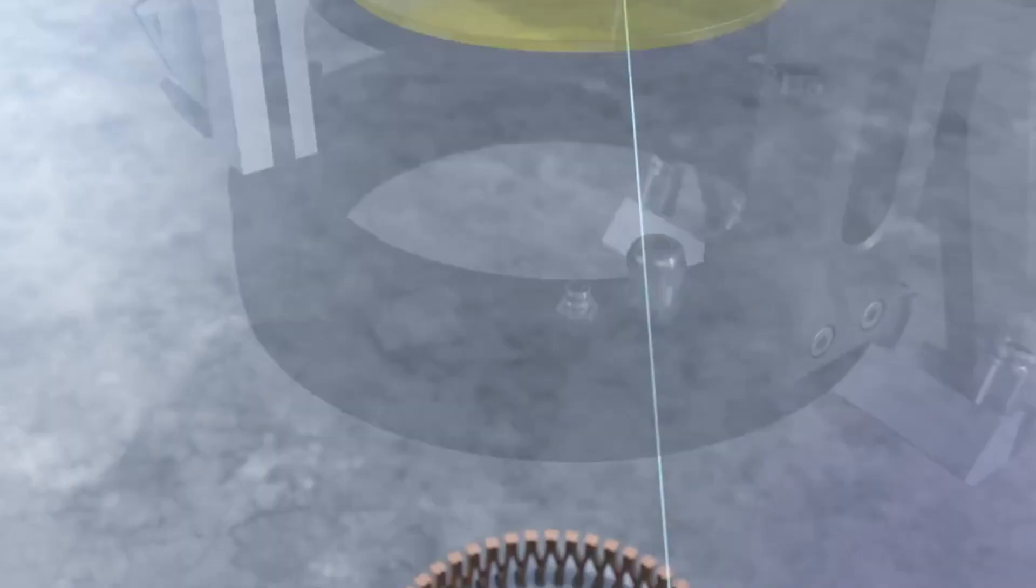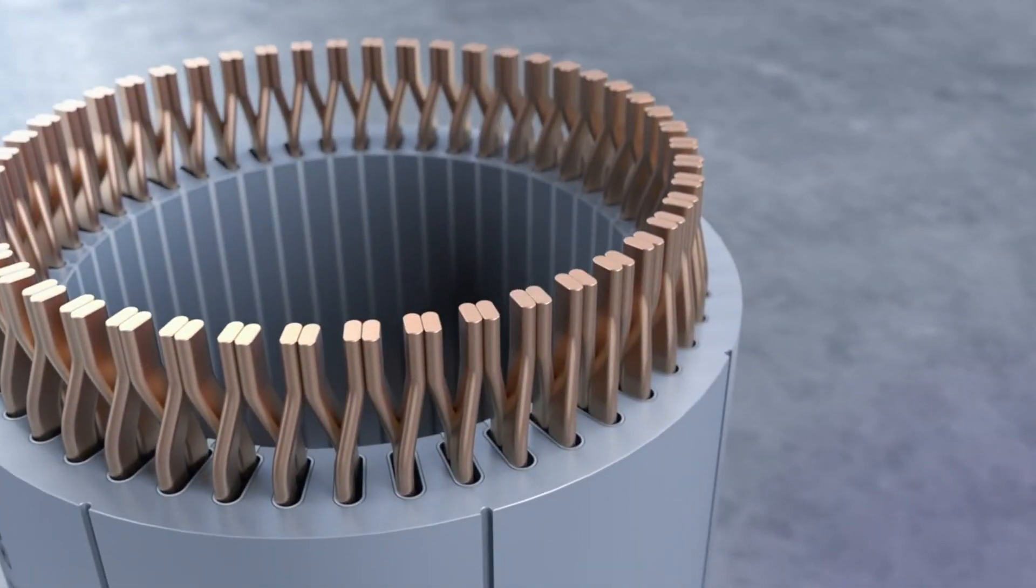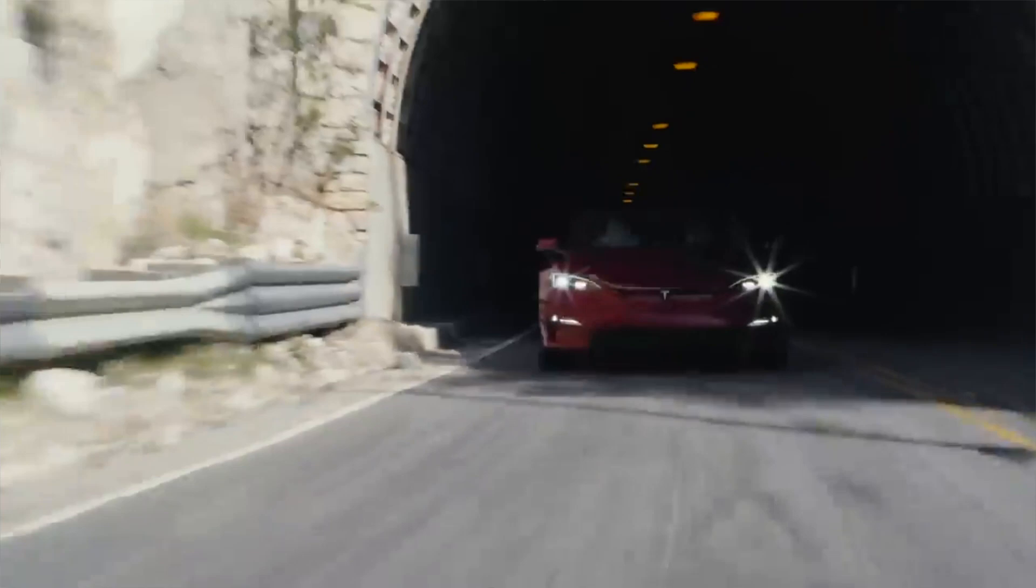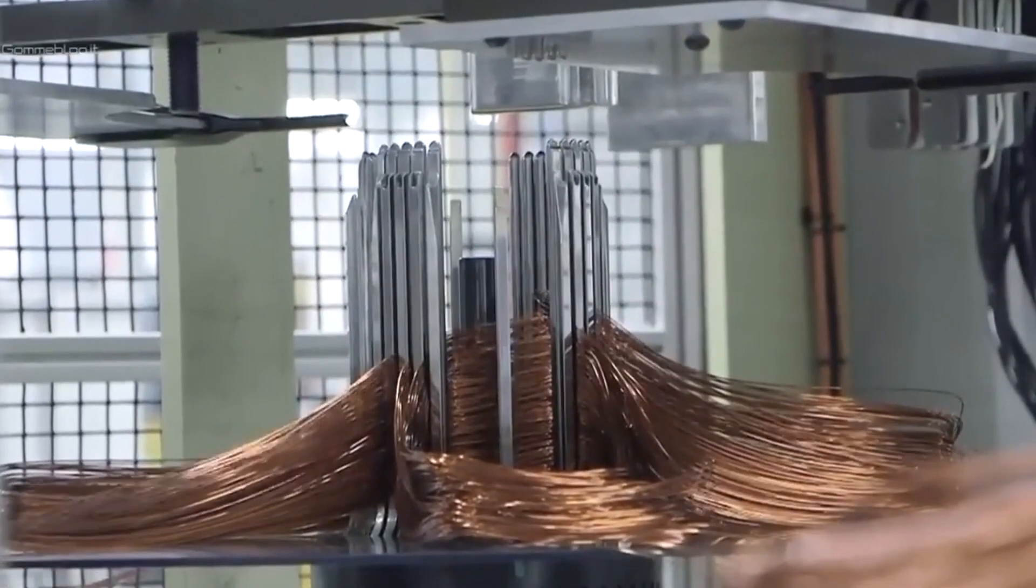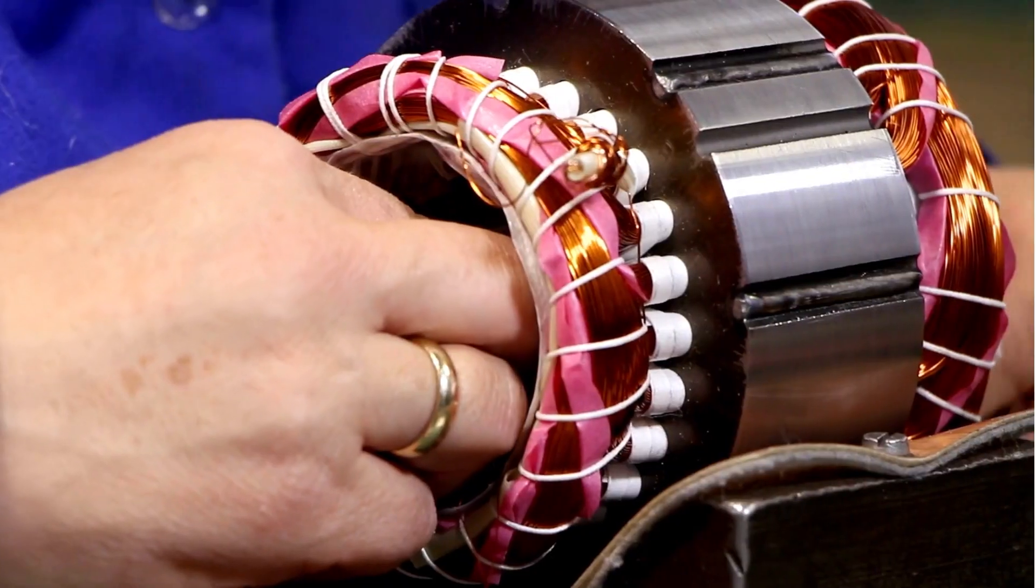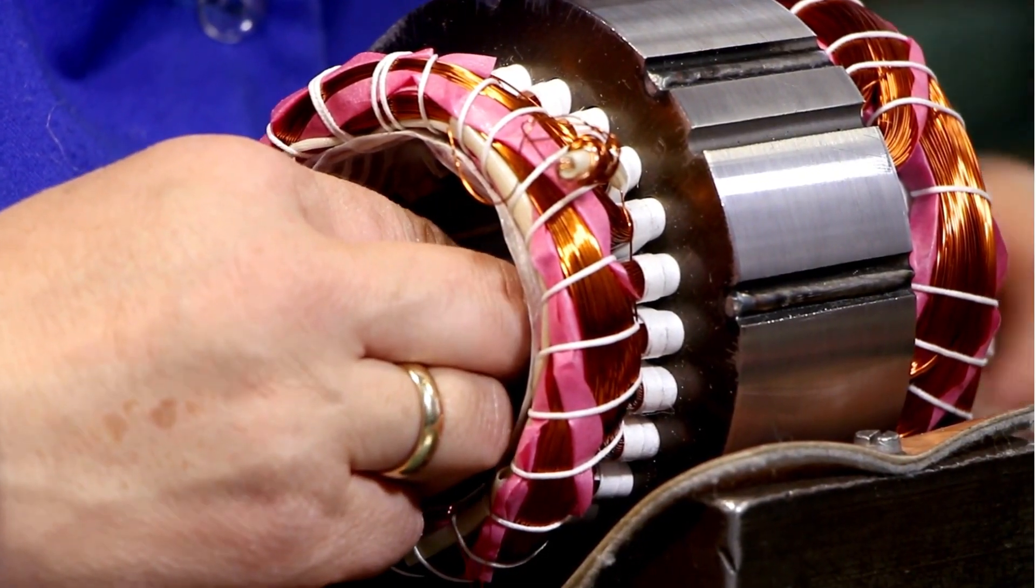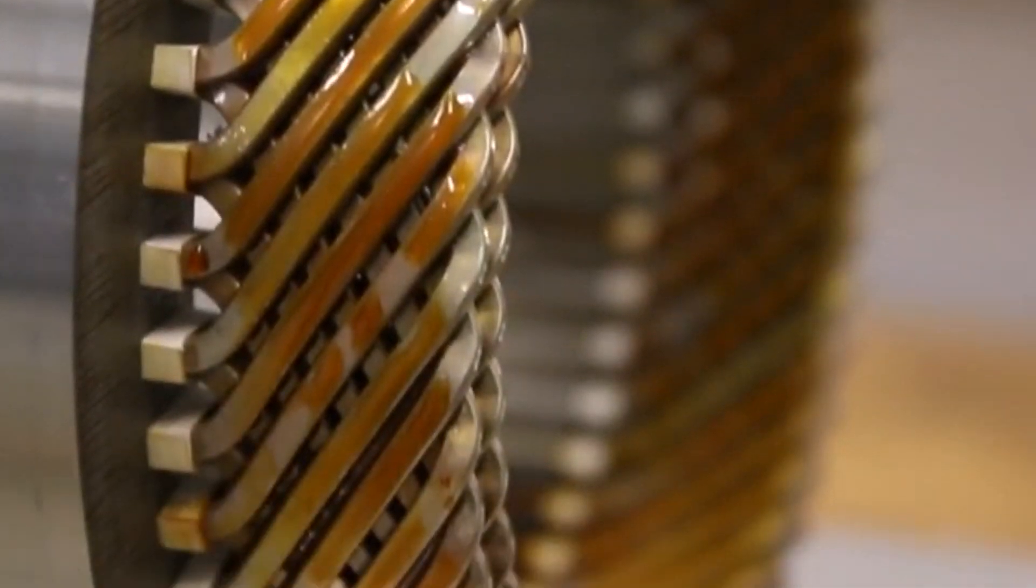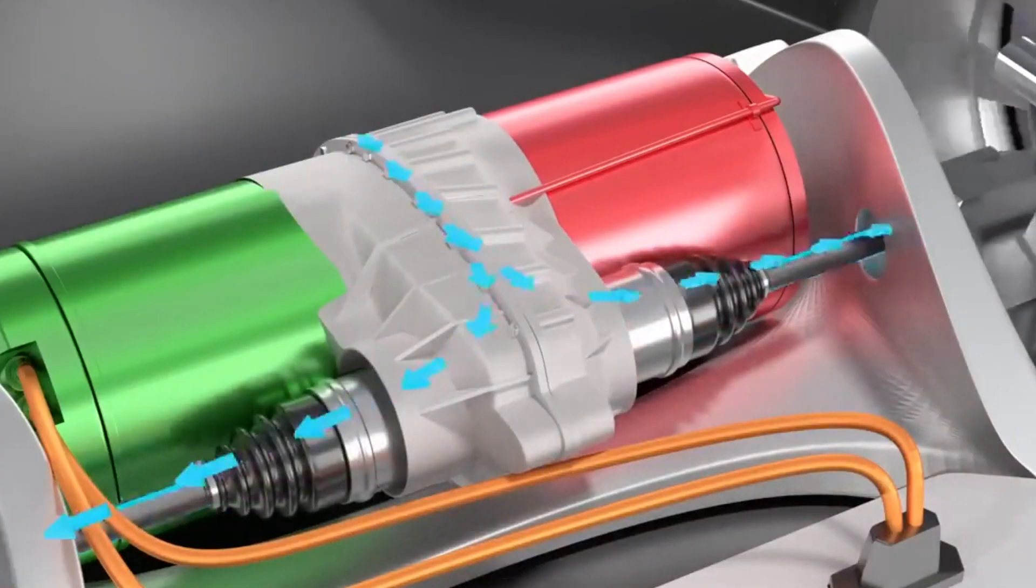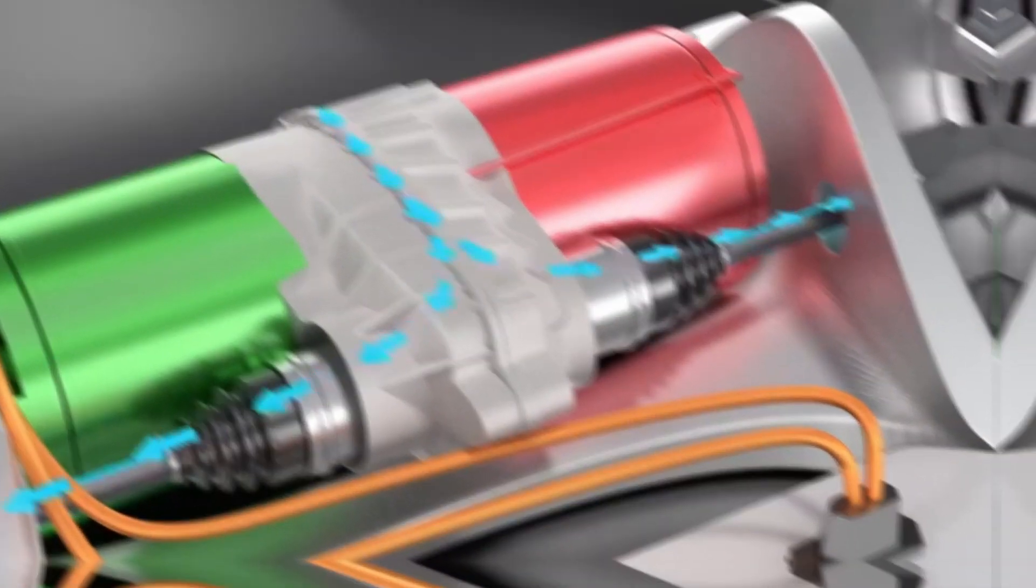Hairpin technology allows for more efficient use of copper in electric motors, which is important for both cost and environmental reasons. With traditional round wire motors, the ends of the wires are typically longer to avoid damage during processing, leading to inefficient use of copper. In contrast, hairpin motors have hardwired copper bars that can be precisely cut to the required length, reducing waste and increasing efficiency. This results in a more cost-effective and environmentally friendly motor design.